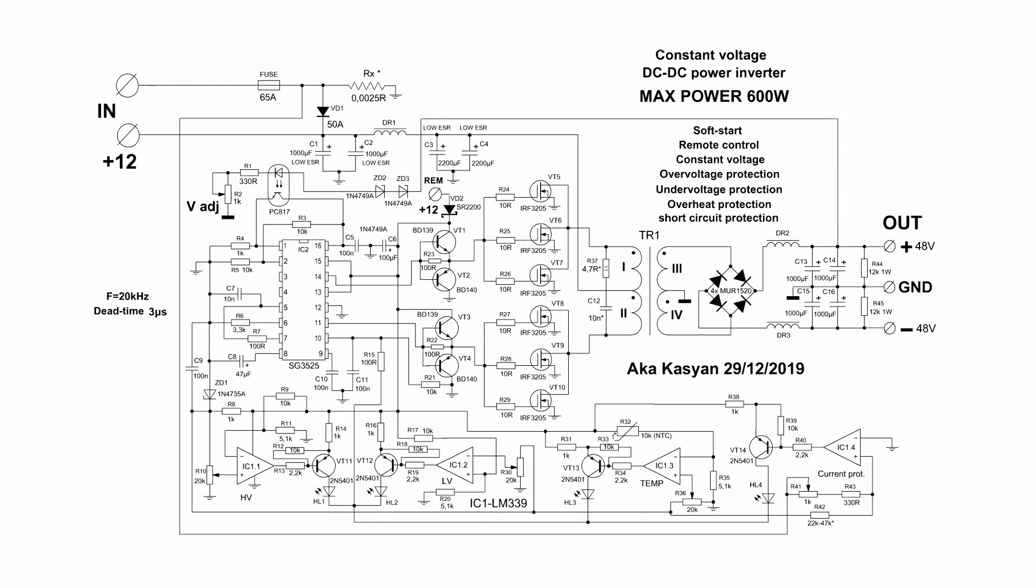If the converter uses only one or two pairs similar to IRF3205, in principle the driver can be excluded. The output current of the microcircuit is enough for these purposes, but the driver significantly unloads it.